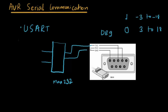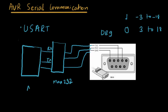With MAX232, you connect the RX and TX pins accordingly with a common ground between the microcontroller and the IC. If you search for 'DB9 MAX232' you would find a good schematic. This is one way to connect a microcontroller to a computer if you have an older DB9 connector.